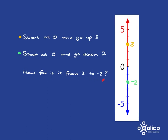So how far is it from 3 to minus 2? Well, we can go and count: one, two, three, four, five steps. But we could also be smarter and say, from 3 to 0 that's three steps, and from 0 to negative 2 that's two steps, and so in total it is five steps from 3 to negative 2 on the number line.